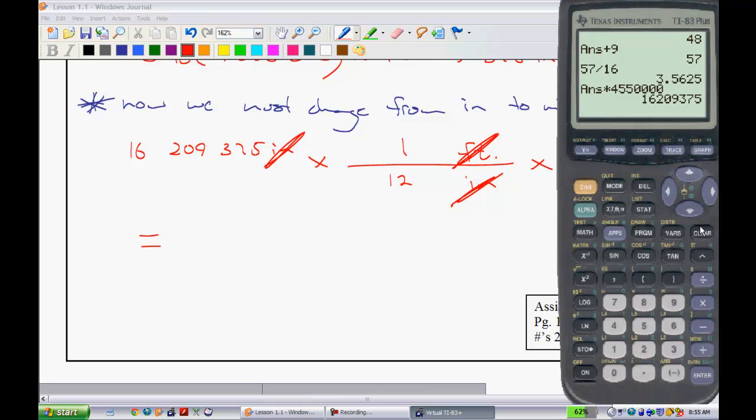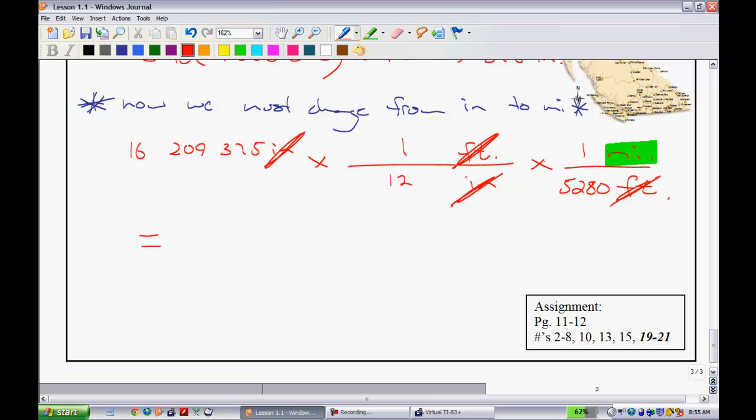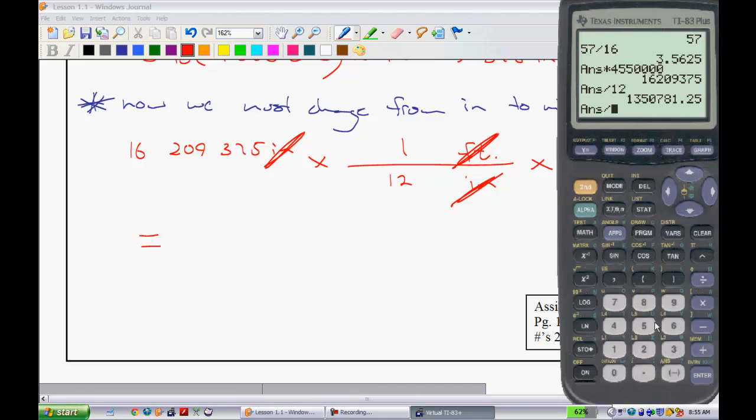So I'll walk you guys through it. We're going to take that answer that we have. If we multiply by one, that doesn't change anything. Now we can divide by 12. So we have that. Now we would multiply by one. That doesn't change anything.